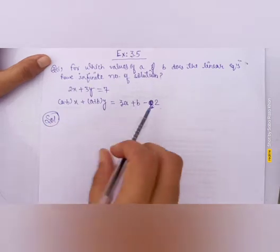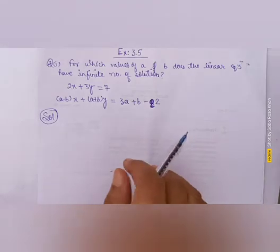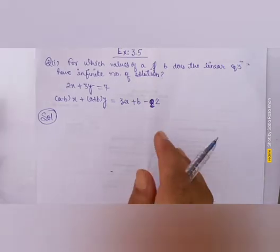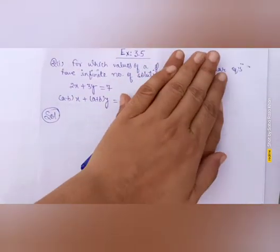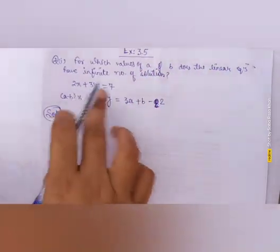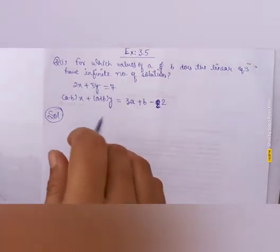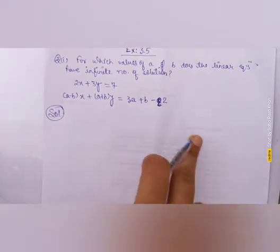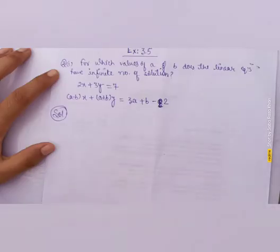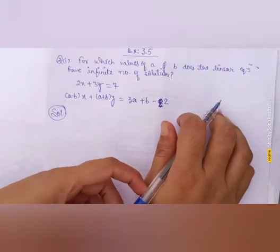We have infinite number of solutions when the lines are consistent, or we can say when the lines are coincident — that is, when one line lies on top of the other. When lines are coincident, they have infinitely many solutions. This condition occurs when a1/a2 = b1/b2 = c1/c2.